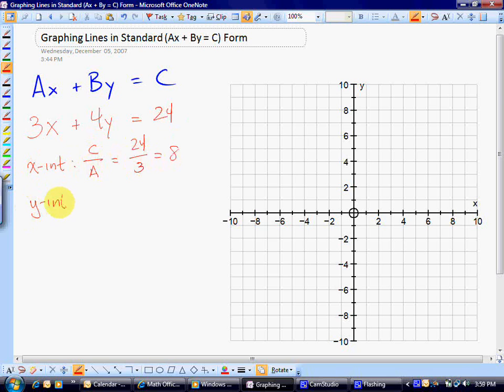To find the y-intercept, we take the c value and divide it by b, which in this case would be 24 divided by 4, which is 6.